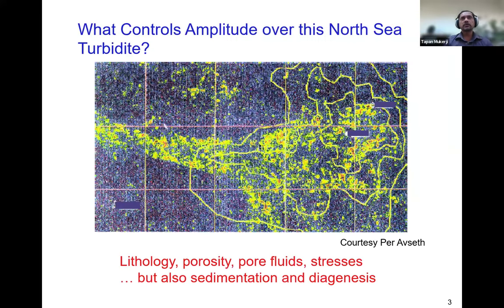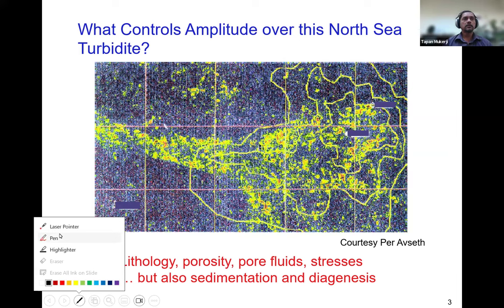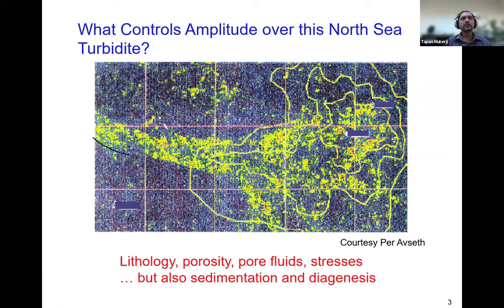This example is from the North Sea. It's a horizon map — we are looking down from the top, and the colors indicate seismic reflection amplitude. Seismic waves are sound waves that go down into the earth and get reflected back, and we see different strengths of the echo. Any geologist would be able to identify this as a turbidite system — a submarine turbidite system — with a channel coming in from one direction.